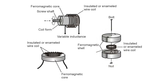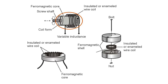The solenoidal core is rod-shaped — that's where the term solenoid comes from. If you have a device that can move this rod in and out of the surrounding coil, you can vary the inductance. That is one of the principal advantages of a solenoidal core.